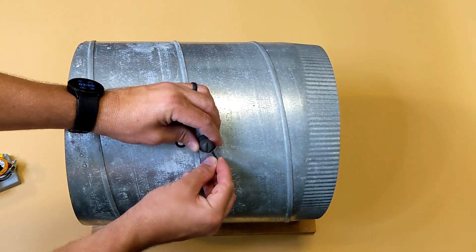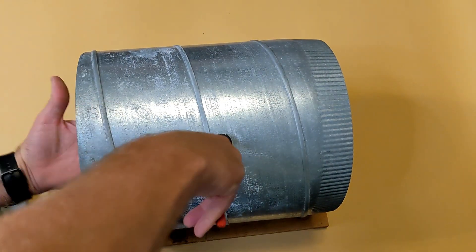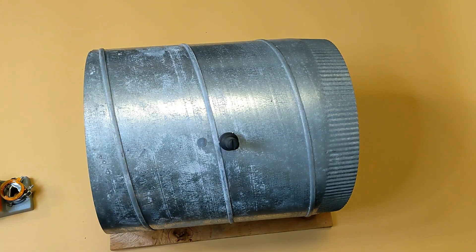Once the set screws are tightened evenly, remove the grommet and tape over the hole.